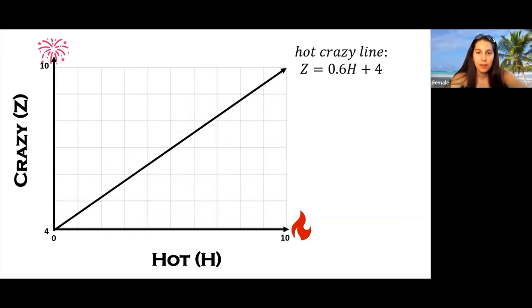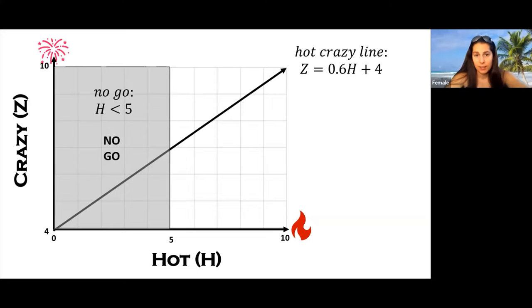Now because men are visual creatures and physical attraction is vital, any woman below a 5 hot is in the no-go zone. She'll be completely ignored unless the guy needs something from her.